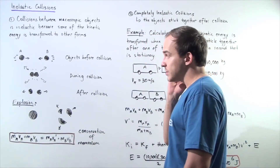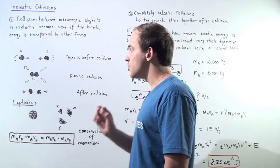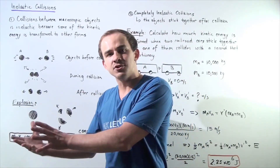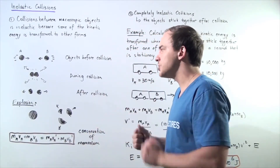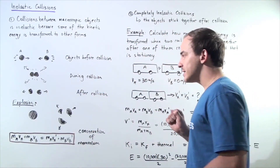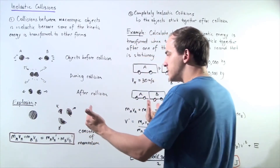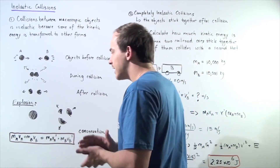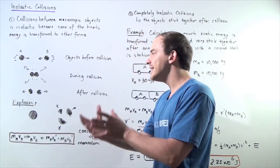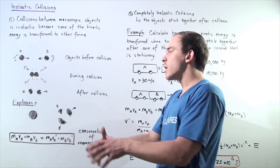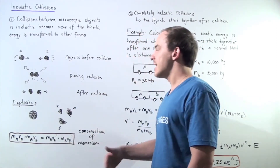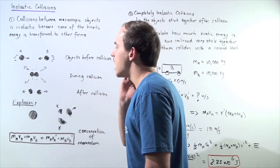A second form of transformation takes place, and that is known as thermal energy. Kinetic energy is transformed into thermal energy, into increasing the internal energy of our two macroscopic objects. That basically means that after our collision takes place, because some of that initial kinetic energy was transformed into other forms of energy, we're going to have less kinetic energy at the end. The total sum of our kinetic energy at the end will be less than the total sum of the initial kinetic energy of the objects.